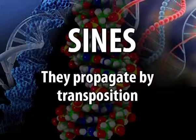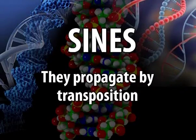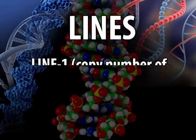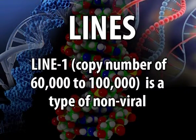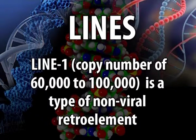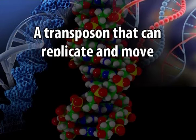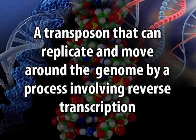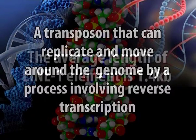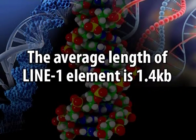For LINEs, LINE-1 is the best example, with a copy number of 60,000 to 100,000 in the genome. It is a type of non-viral retro element — a transposon that can replicate and move around the genome by a process involving reverse transcription. The average length of a LINE-1 element is 1.4 kb or kilobase pairs.